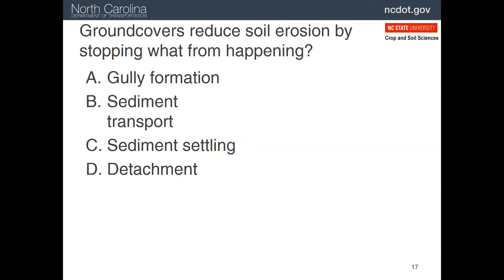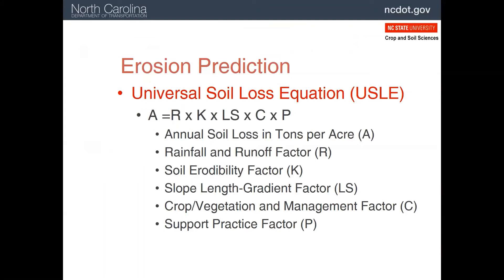Ground covers are used to stop detachment from happening — that is the most important thing they prevent. Something called the Universal Soil Loss Equation was developed to help predict how much erosion might occur, mostly in crop fields. If you look at what goes into the calculations, you can see all the factors we've discussed: rainfall, soil erodibility, slope gradient, cover, and any practices we might want to install.